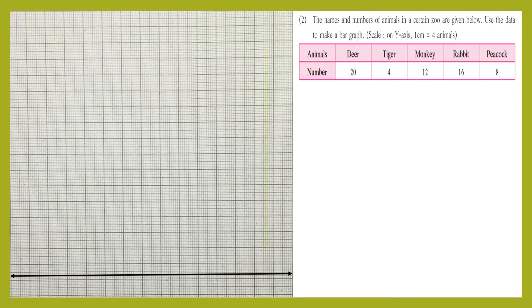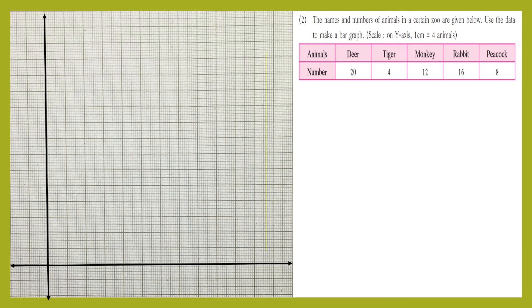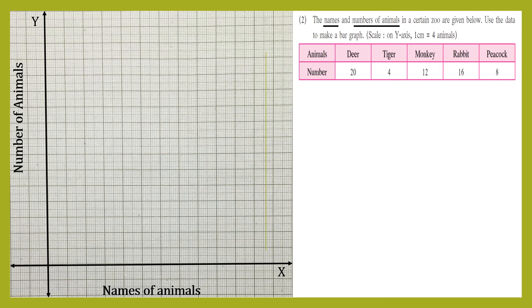We are going to represent this data in the form of a bar graph. First, we draw a horizontal line — the X-axis — and a vertical line — the Y-axis. Let's label the X-axis with capital X and Y-axis with capital Y. On the X-axis we are going to write names of animals, and on the Y-axis we will label number of animals.